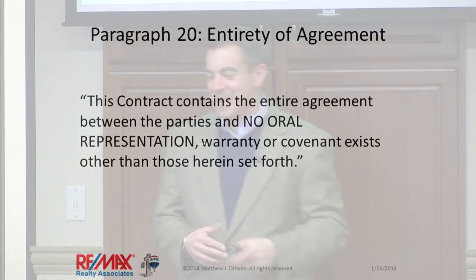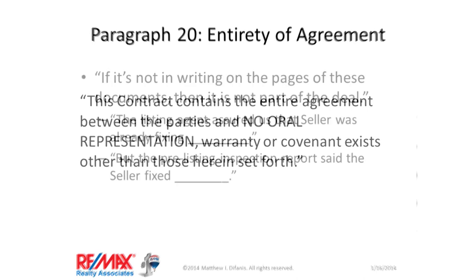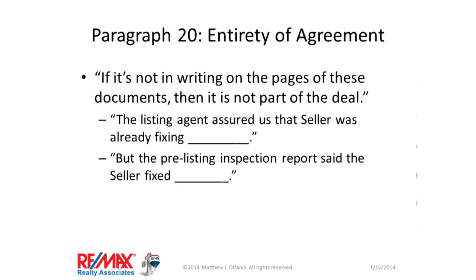Paragraph 20: entirety of agreement. The contract contains the entire agreement between the parties and no oral representation, warranty, or covenant exists other than those herein set forth. Here is how you explain this: if it's not in writing on the pages of these documents, it is not part of the deal. Here are a couple of common examples of how you could inadvertently do something wrong.